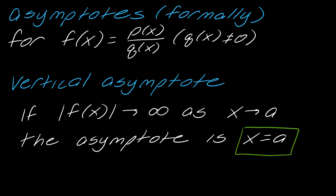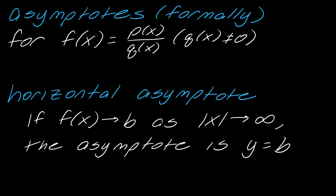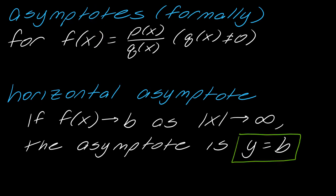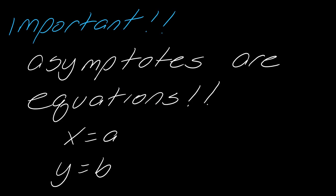Just remember that a vertical asymptote is x equals A as we go through this. For horizontal asymptotes: if F(x) approaches B as the absolute value of x approaches infinity, then the asymptote is y equals B. The important thing is that asymptotes are equations — this is one of the most common sloppy mistakes.